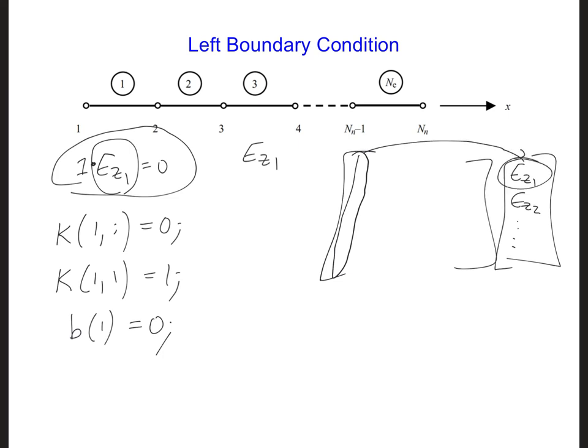So we can take into account that ez1 is equal to 0 by setting all of these coefficients in the first column of the k matrix equal to 0, except for the very first one right here, which we already said we need to have equal to 1. Then we'll make sure to get a 0 any time there's a coefficient multiplied by ez1.